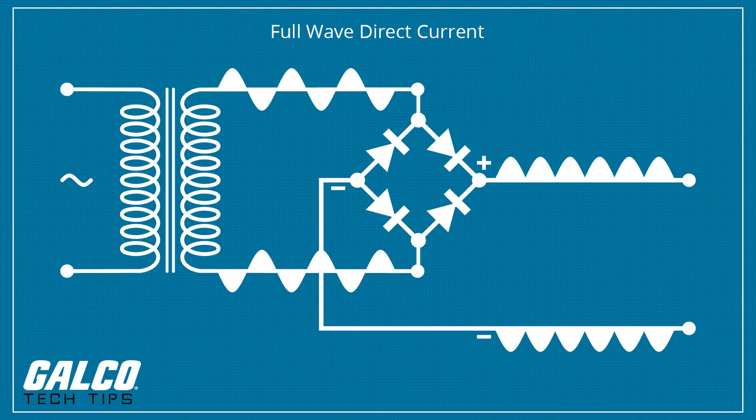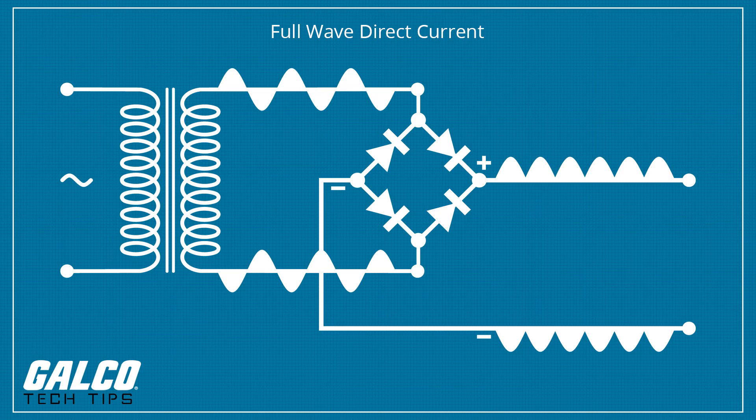In full wave rectification, the negative portions of a signal are passed to the output with reverse polarity rather than clamped at zero as it is done with half wave rectification.